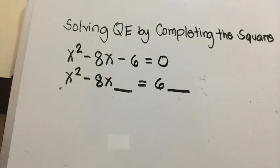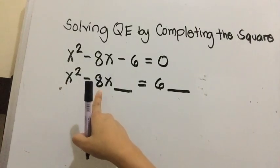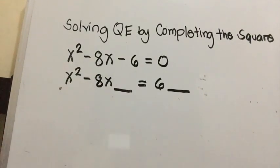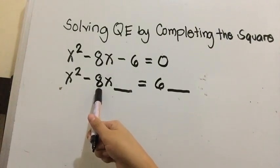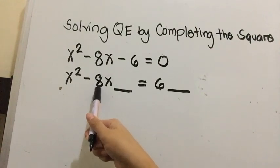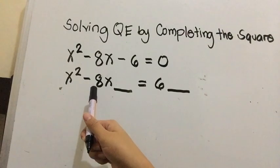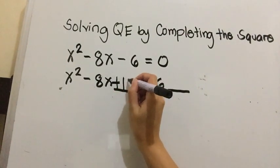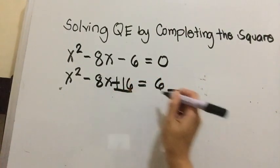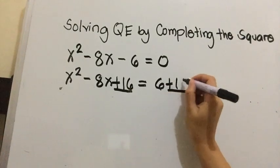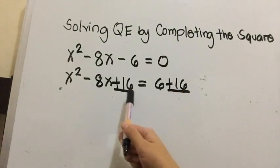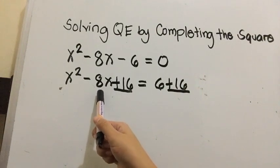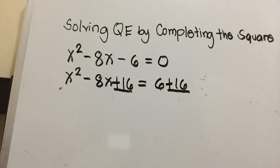How are we going to find the third term? Our middle term is 8. We're going to divide this by 2, so 8 divided by 2 is 4. And 4 times 4 is 16. So we're going to add 16 on both sides. How did we get 16? 8 divided by 2 is 4, and 4 times 4 is 16.